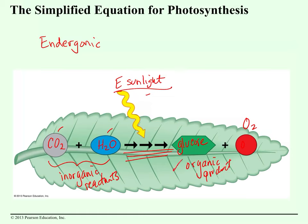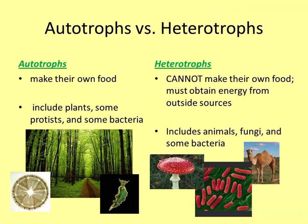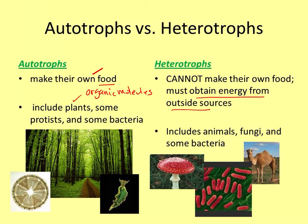Autotrophs make their own food — and by food I mean organic molecules. Heterotrophs cannot make their own food; they have to obtain it from the outside by eating it. Examples of autotrophs include plants, some protists like algae, seaweed, and some bacteria. Heterotrophs include all animals, fungi — mold and mushrooms actually dissolve and digest what they're growing on, so they also have to eat — and some bacteria are heterotrophs as well.